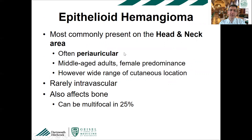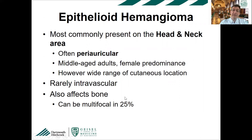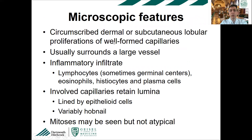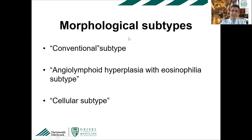Epithelioid hemangioma most commonly presents on the head and neck, often periauricular, in middle-aged adults. It can rarely happen intravascularly — that should not discourage a benign diagnosis. It can be multifocal, resembling metastatic disease in the same region. Bone involvement occurs in about 25% of cases, still compatible with indolent behavior. Generally they are circumscribed, dermal or subcutaneous, often surrounding a large vessel, with an inflammatory infiltrate and characteristic epithelioid cells with hobnail features and voluminous eosinophilic cytoplasm. The three morphologic subtypes are: conventional, angiolymphoid hyperplasia with eosinophilia, and cellular.